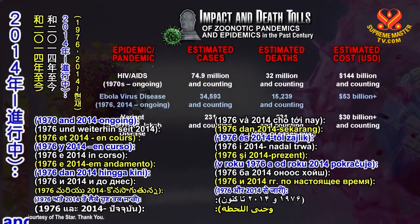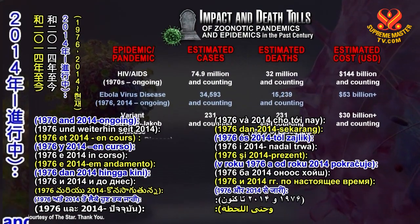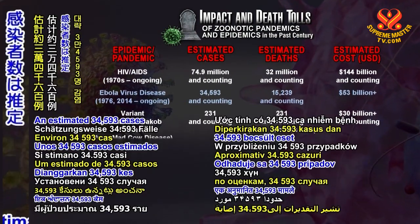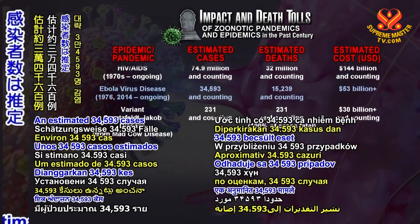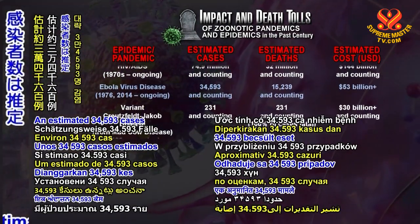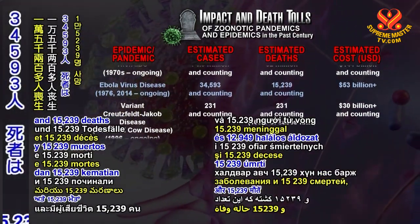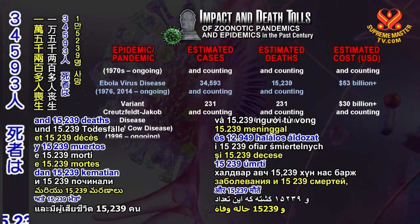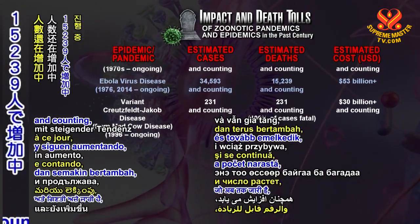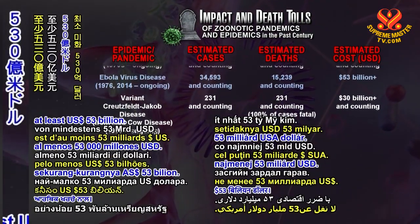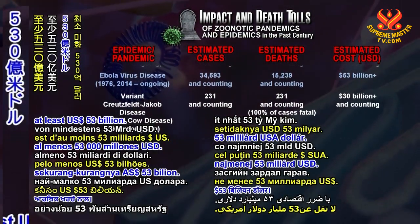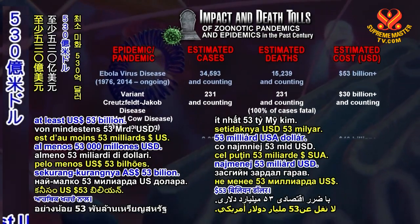Ebola virus disease, 1976 and 2014 to ongoing: an estimated 34,593 cases and 15,239 deaths and counting, with an economic cost of at least 53 billion U.S. dollars.